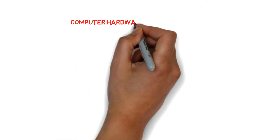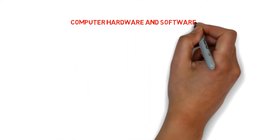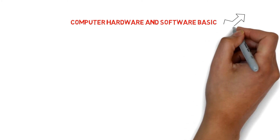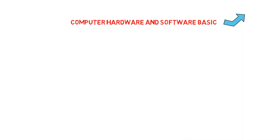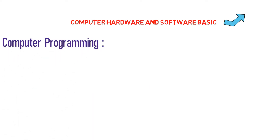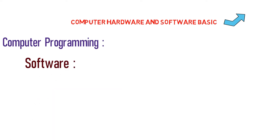So let's talk about hardware and software. If you want to talk about hardware and software, it will be easy for you. The first topic is computer programming. If you want to talk about programming language, we can recall the software.